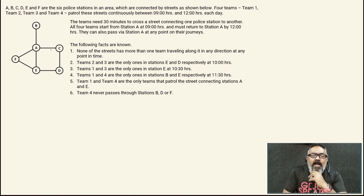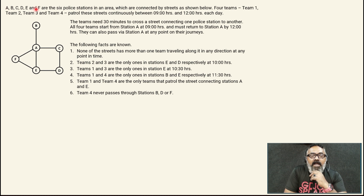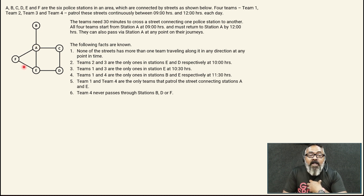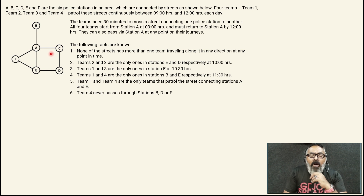Now this set says that A, B, C, D, E and F are 6 police stations in an area, which are connected by streets as shown. We have a visual representation of those connections. B is just connected to A; A is connected to F, C and E; F is connected to E and A; E is connected to A, F and D; D is connected to E and C; and C is connected to A and D. It's not a complicated connection.